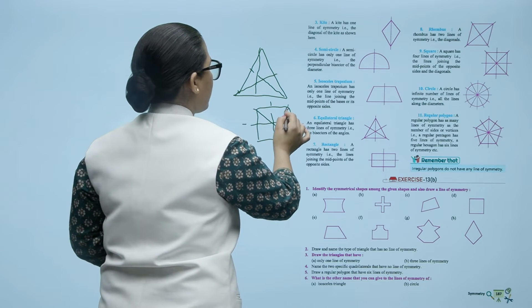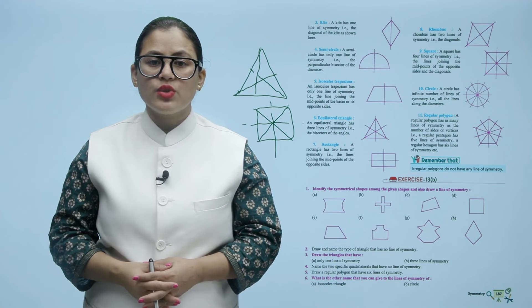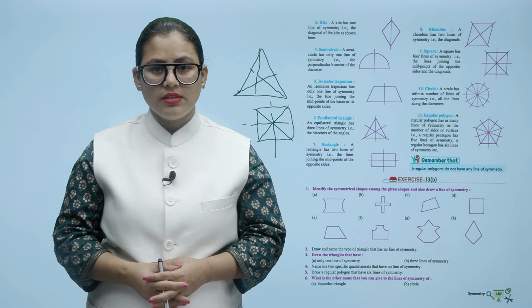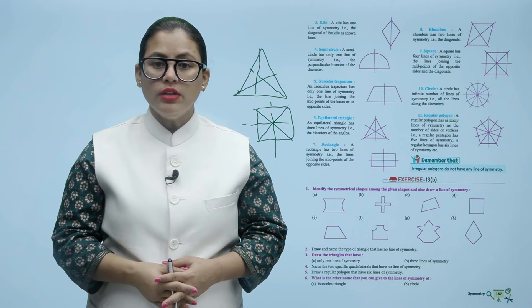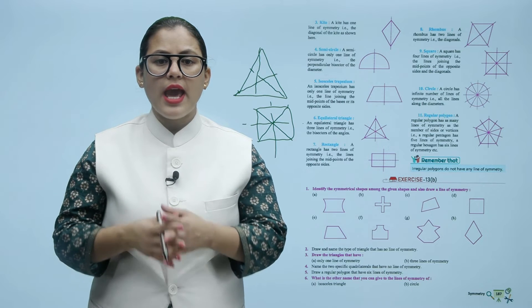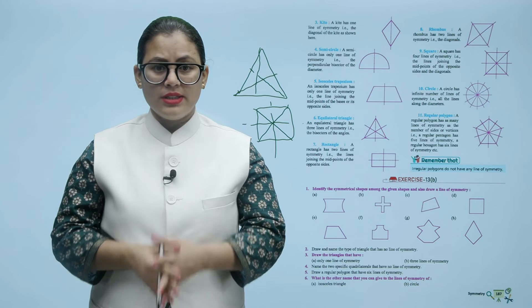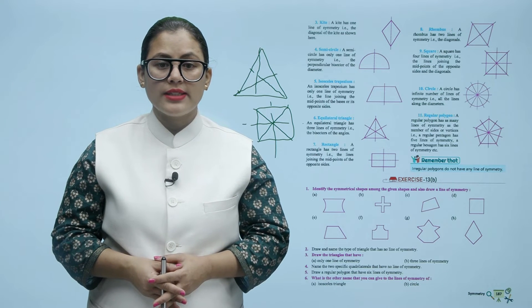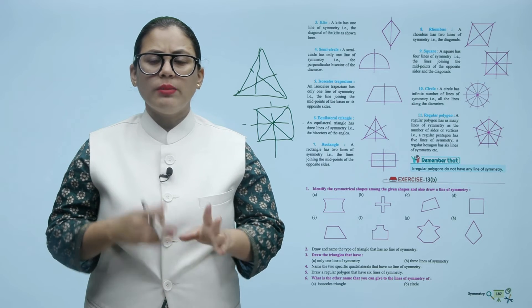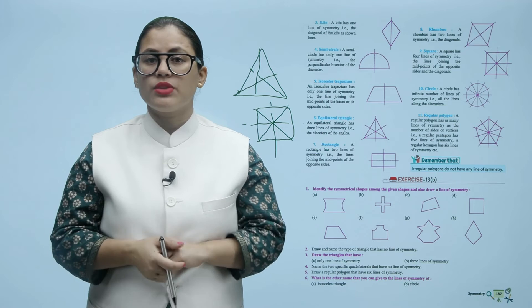A circle has an infinite number of lines of symmetry — all lines along the diameters. A regular polygon has as many lines of symmetry as it has sides. For example, a regular pentagon has five lines of symmetry, and a regular hexagon has six lines of symmetry.